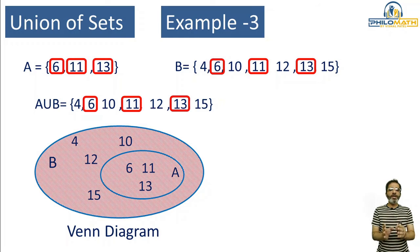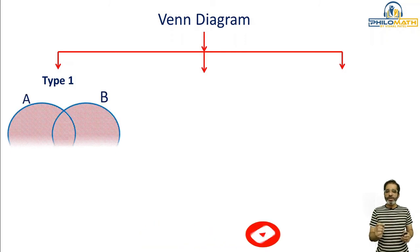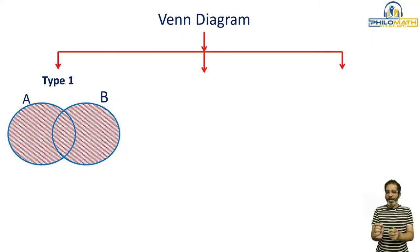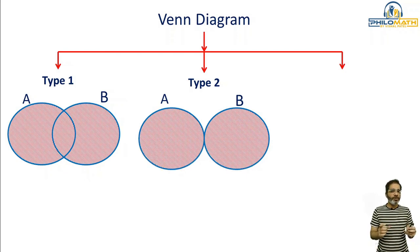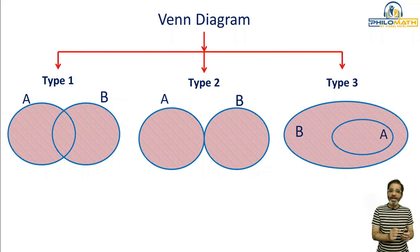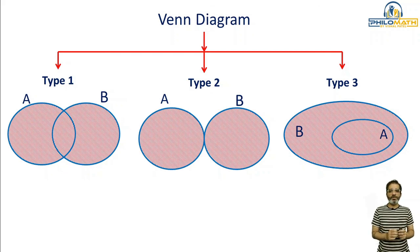We did three examples — now let's summarize. We drew three types of Venn diagrams. Type one: two sets having some elements in common — we drew two intersecting circles and wrote the common elements at the intersection. Type two: two sets having nothing in common — we drew two touching circles, not intersecting. Type three: all elements of Set A are present in Set B — Set A comes inside and Set B comes outside as nested circles. These are the three types of Venn diagrams for the union of two sets. Thank you so much.